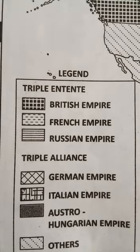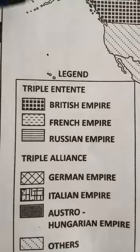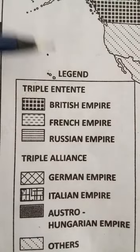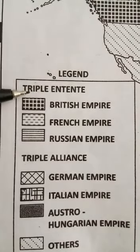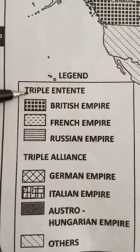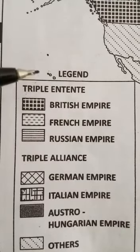Now, we will move on to the world map. In chapter 1 history, they have given the countries who have participated in World War I. The countries were divided into two groups: one is Triple Alliance and the second one is Triple Entente.